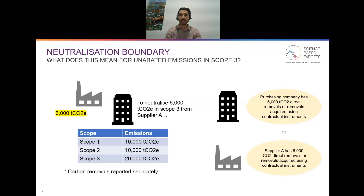One thing this does not allow is for a company to take removals in one part of its value chain — for example, removals that occur upstream — and use those to neutralize emissions downstream, unless it is acquiring those removals using the contractual instruments specified by the criteria.